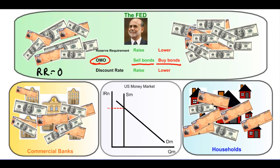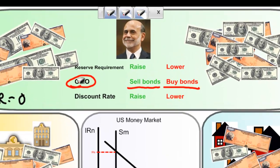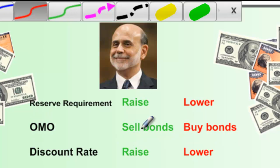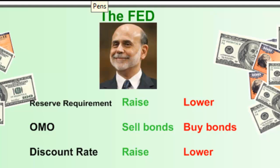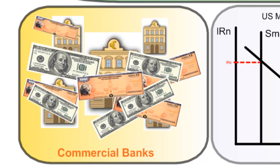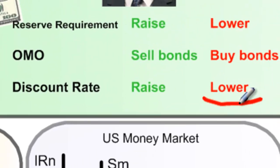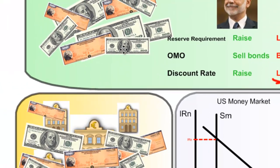The final tool of monetary policy is the discount rate, defined as the interest rate on short-term loans from the Federal Reserve to commercial banks. Why would a commercial bank want to borrow from the Federal Reserve? Generally, banks prefer to borrow from each other, but the Federal Reserve is known as the lender of last resort. If a commercial bank does not have enough to meet its reserve requirement at the end of a given day, it could be in violation of federal law, so it will borrow from the Fed to meet its required reserve ratio.